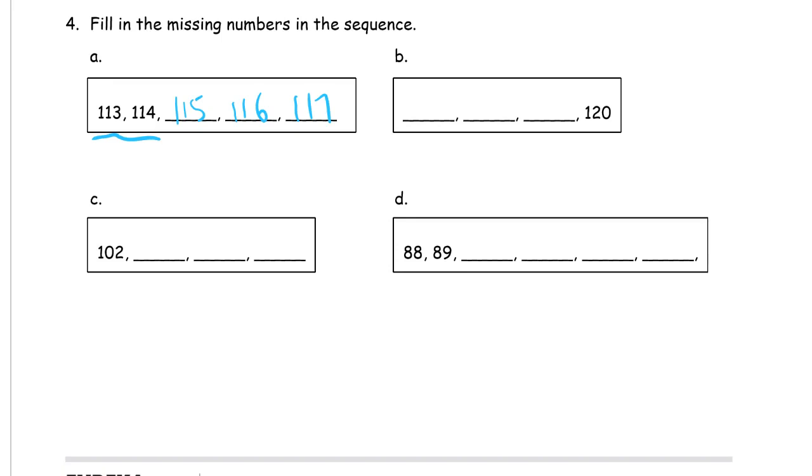And here we just have this one number at the end, 120. So we're counting backwards, really. So what comes right before 120? Let's say it's 119, 118, 117. And let's just keep counting by ones. So here's 102. What would come next? 103, 104, 105.